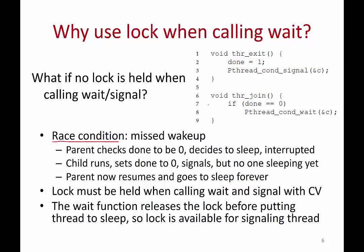The child sets done equal to 1 and signals the condition variable, but is anybody woken up? No, because the parent has not slept yet. The child signals but that signal doesn't do anything, and the child finishes. Now the parent resumes and goes to sleep — but who will wake up the parent? Nobody, because the child has already sent the signal. So the parent will sleep forever. This is a bad outcome — a race condition in the sleep/wake process.